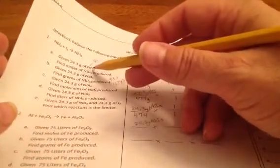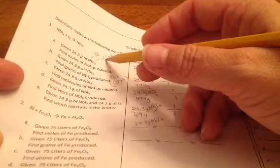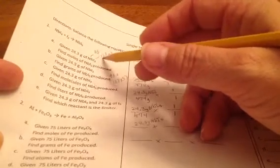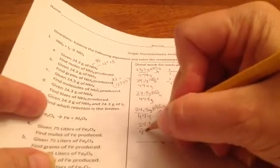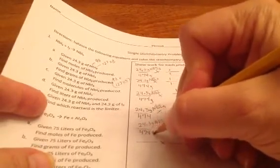The molar mass of NBI3 is, I've got 1 NB, that's 93, and 3 I's, each at 127 grams. Both of those numbers come off the periodic table, and that gives me a total of 474 grams.